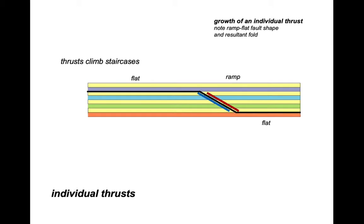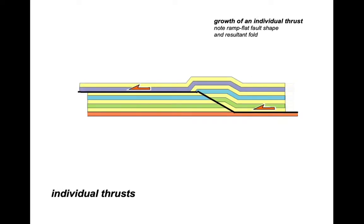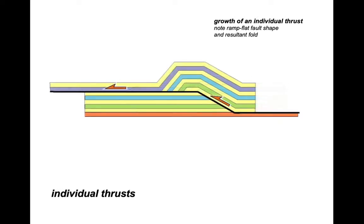Here we've picked out the lower side of the ramp, called the foot wall, marked in blue, and the hanging wall above in red. So let's move on the fault plane. And the hanging wall moves up and off to the left. In this animation, we've kept the foot wall fixed and all the action has happened by the hanging wall moving over the top.